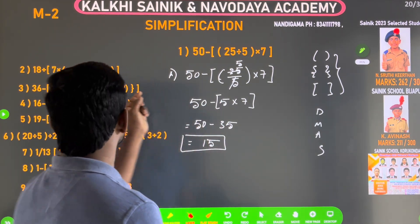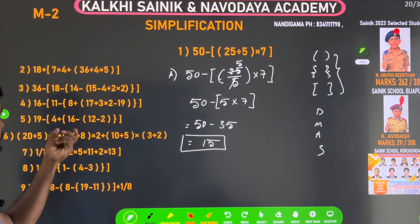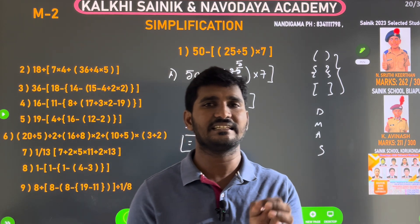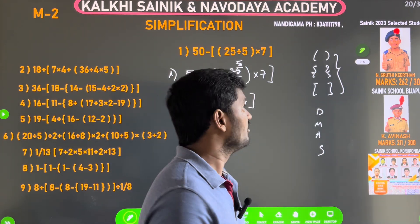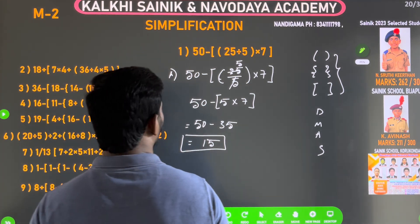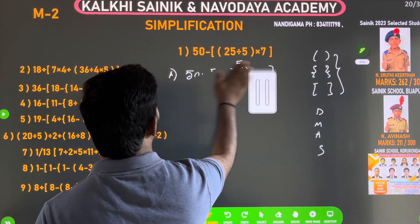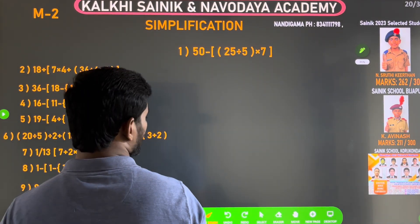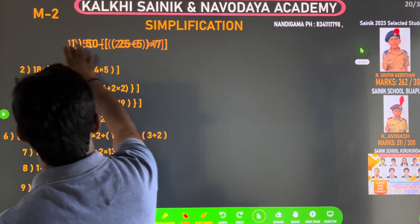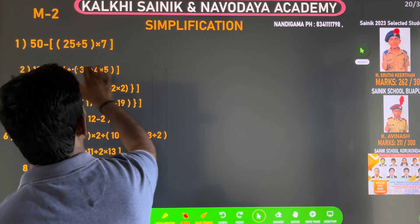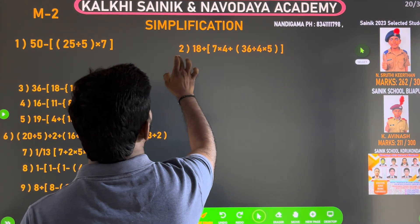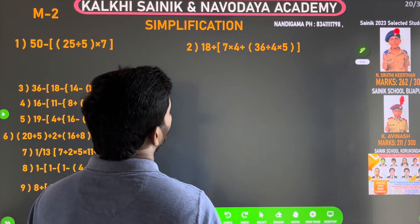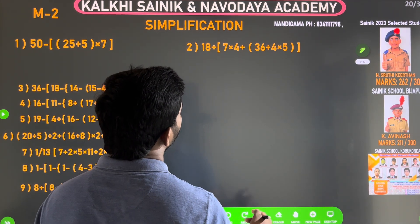We can search for questions. If you want to check these questions, you will be able to understand them. Now let's look at the second question. The second question is: 18 plus 7 into 4 plus 36 divided by 4 into 5.